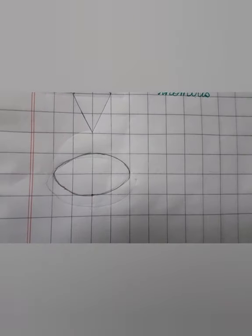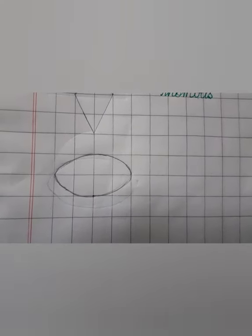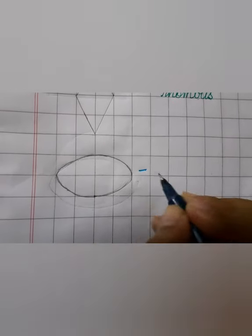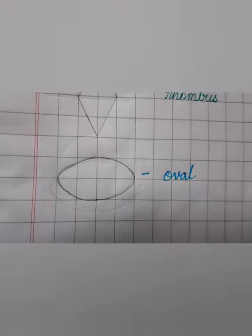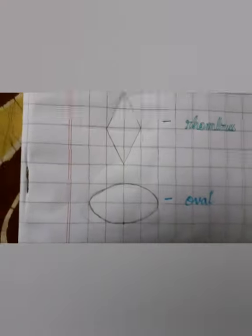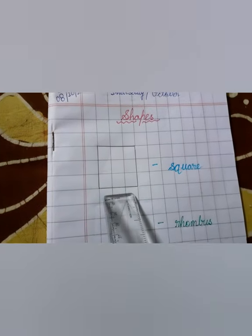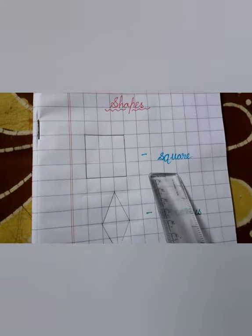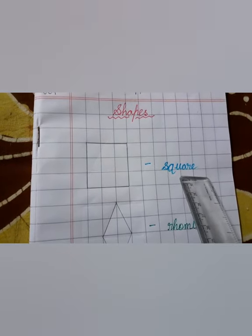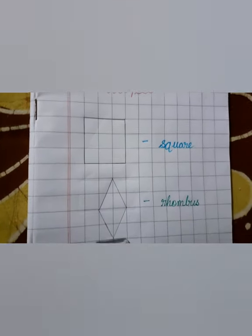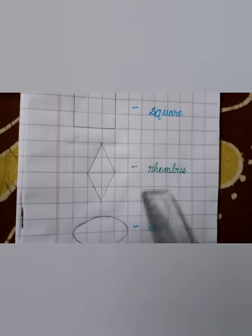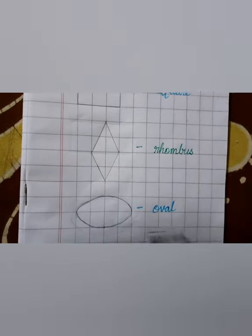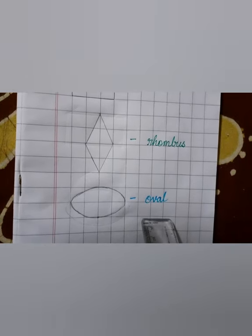We have finished our oval. The spelling is O-V-A-L — oval. Let's read from the top: the heading is Shapes. First shape is square — S-Q-U-A-R-E. Next is rhombus — R-H-O-M-B-U-S. Last is oval — O-V-A-L.